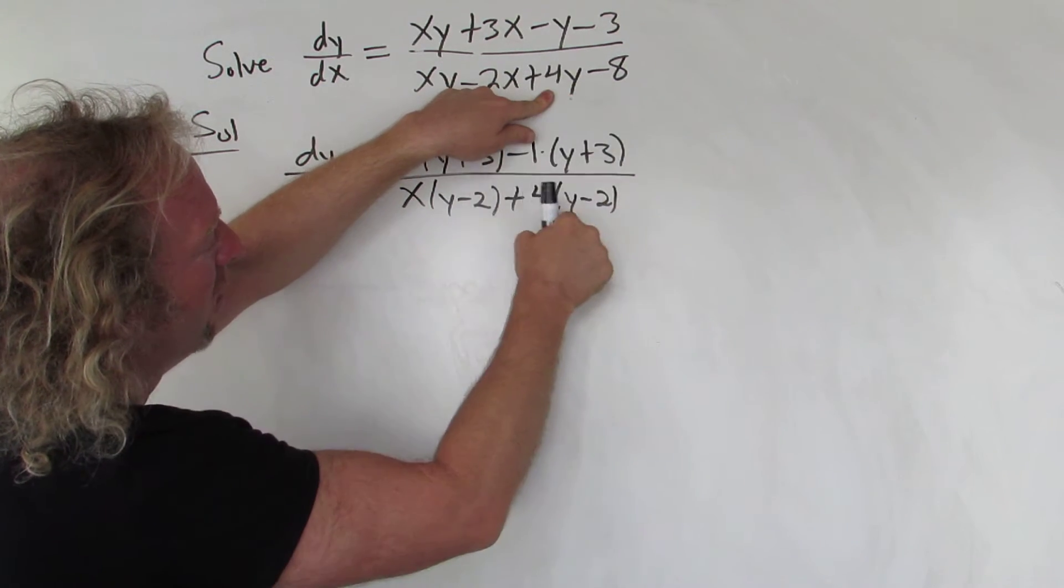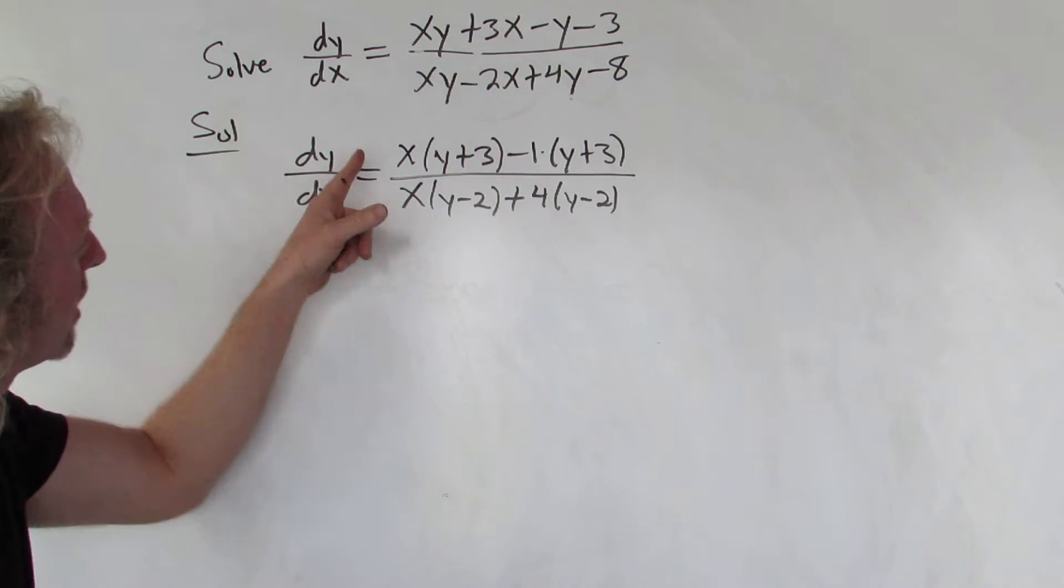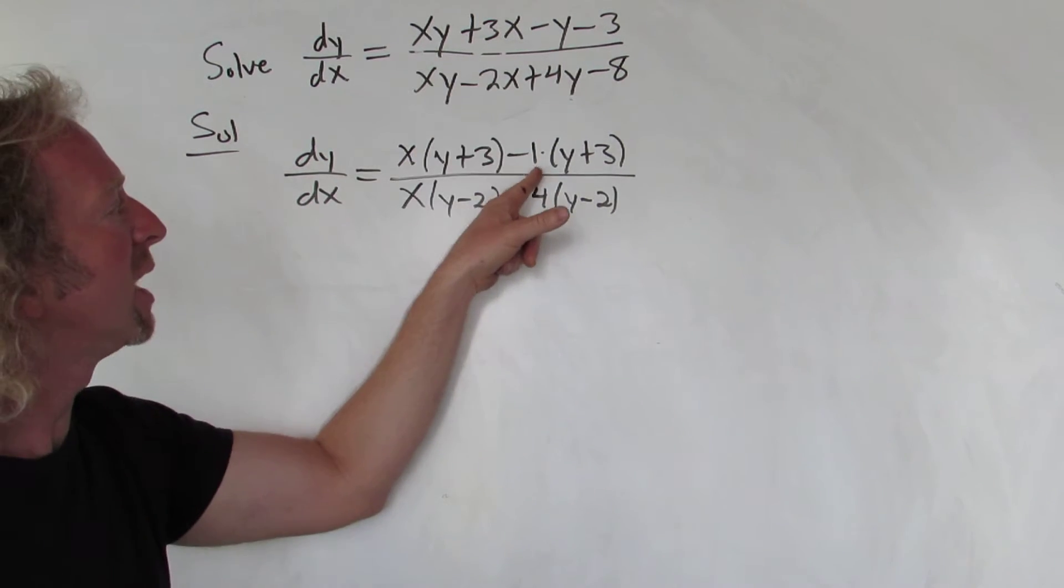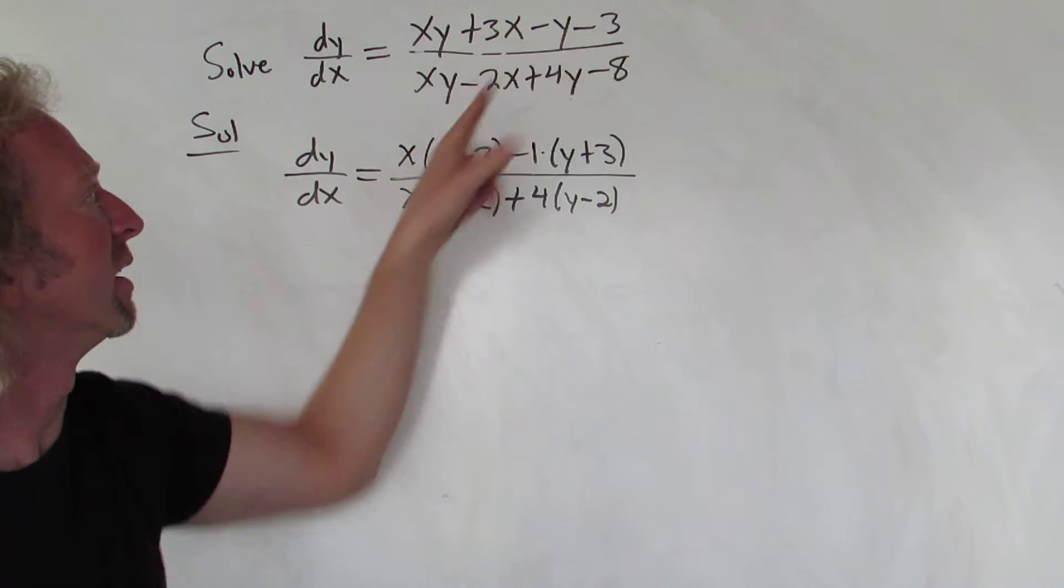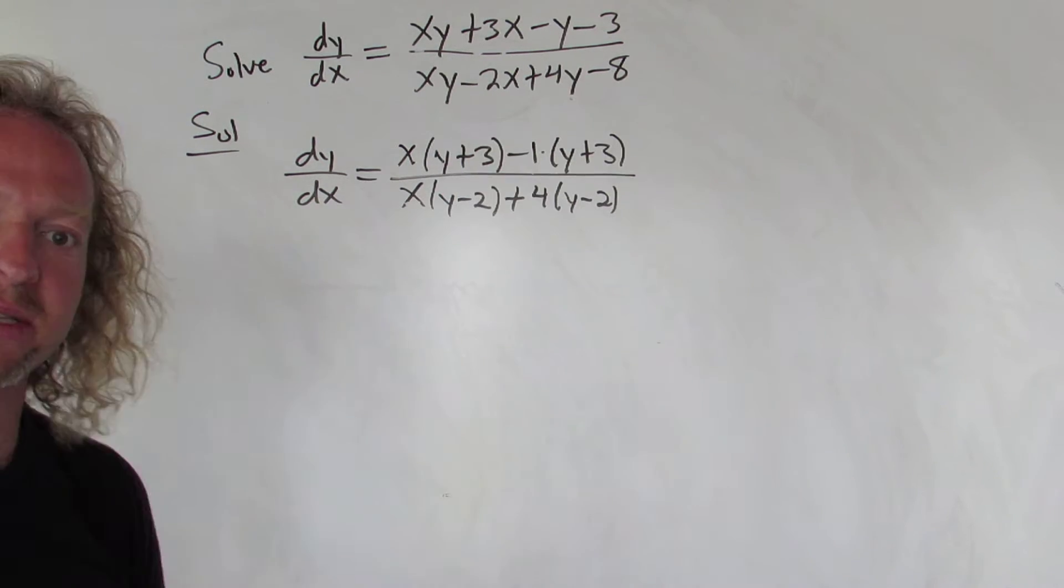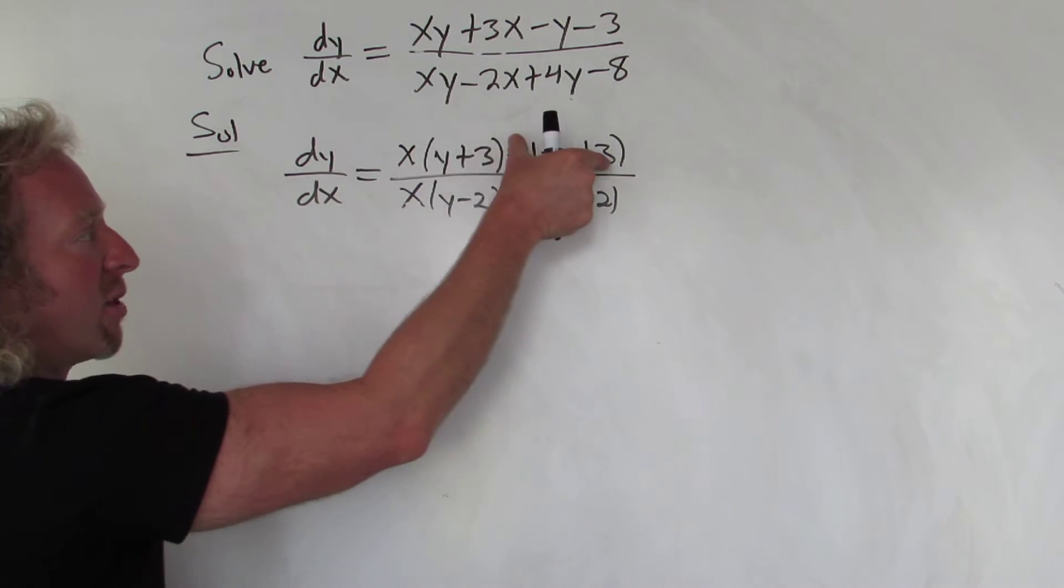Four y minus eight. So it looks okay. Let's check it: xy, xy, 3x, 3x, negative y, negative three, xy, xy, 2x, 2x, 4y minus eight, 4y minus eight. Good stuff. Now we can factor out a (y+3).